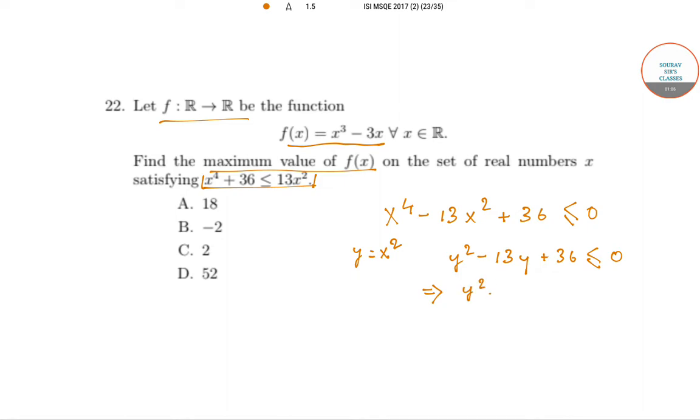Y squared minus 4y minus 9y plus 36 is less than equal to 0. Just by doing a simple middle term factorization we get y minus 4 and y minus 9 is less than equal to 0.